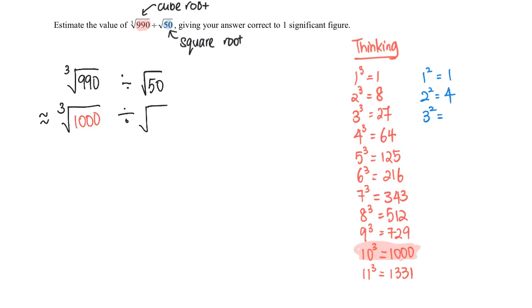1 squared is 1, 2 squared is 4, 3 squared is 9, 4 squared is 16, 5 squared is 25, 6 times 6 is 36, 7 times 7 is 49. Just in case, 8 times 8 is 64.